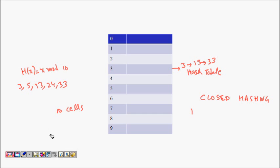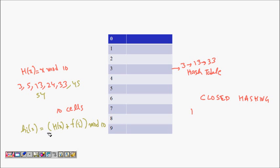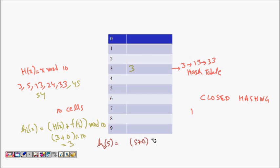Let's try an example with elements 3, 5, 13, 24, 33, 45. The formula is h_i(x) = h(x) + f(i) mod table size, where h(x) = x mod 10. For 3: h_0(3) = 3 + f(0) = 3 + 0 mod 10 = 3, so 3 is inserted at cell 3. For 5: h_0(5) = 5 + 0 mod 10 = 5, so 5 is inserted at cell 5.